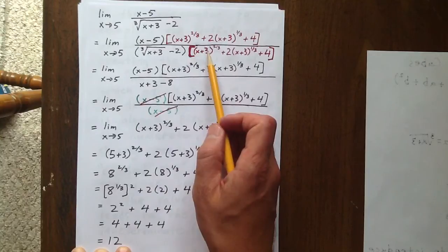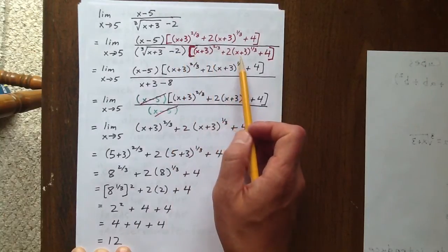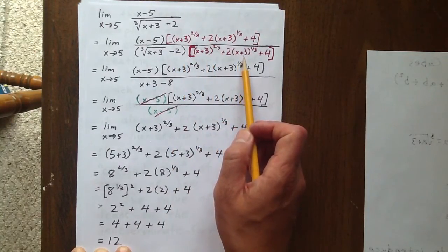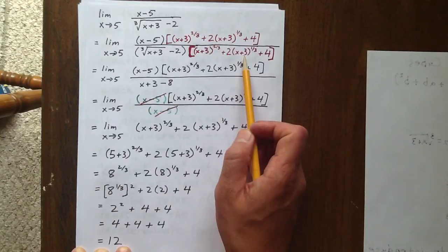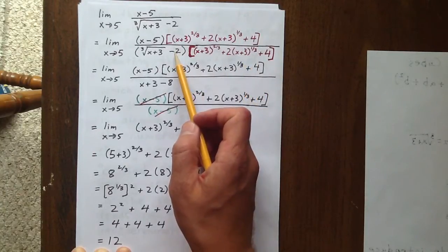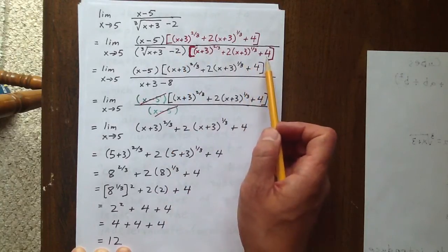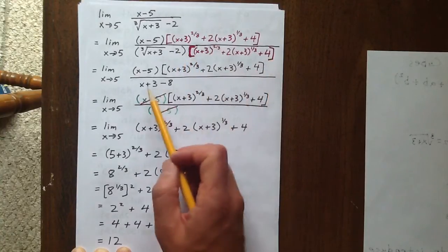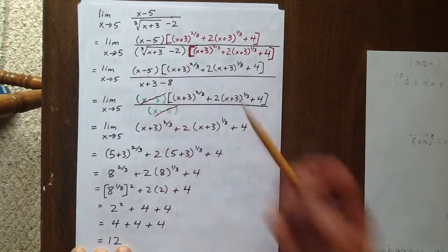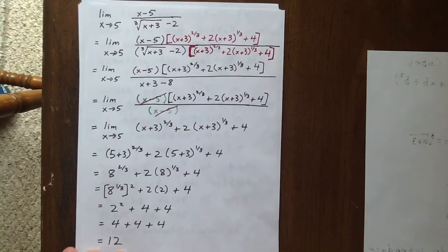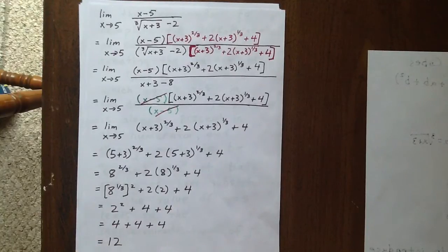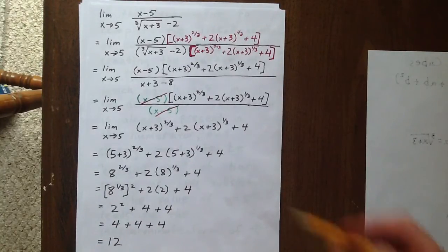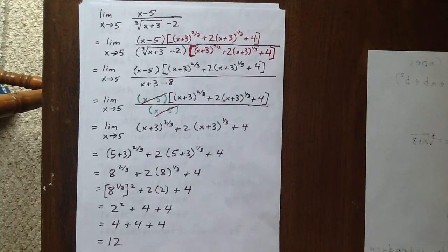Minus 2 times x plus 3 to the two-thirds, minus 4 times x plus 3 to the one-third. All those terms have now canceled out. And we have a negative 2 times a positive 4, which is minus 8. So ultimately this simplifies to x plus 3 minus 8. Well x plus 3 minus 8 equals x minus 5. So we have our offending factor in both the numerator and denominator.